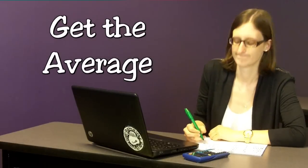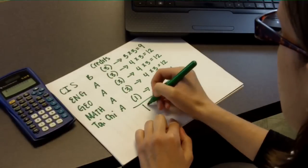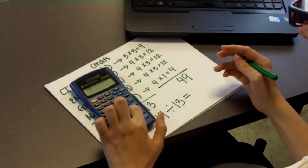Once you've got all of your quality points figured out, you need to get the average. Just add all the quality points up and divide them by the total number of credits. The answer is your GPA.